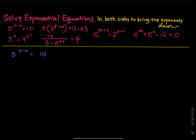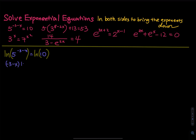The first one is 5 raised to the negative 3 minus x equals to 10. The first step is I will ln both sides because that is the only way to bring the power down. So we bring this down: 3 minus x in parentheses. We have ln5 equals to ln10. Then we want to do everything we can to isolate x on one side. We have negative 3 minus x equals to ln10 divided by ln5.